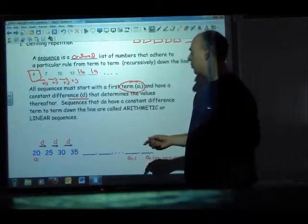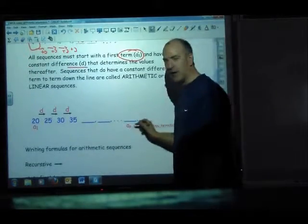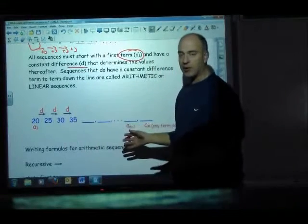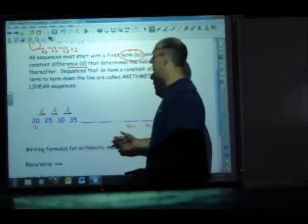But usually, you guys, what we're trying to find is some value down the line. Can we allow these beginning terms to get us somewhere down the line and also to make a formula for how we get down the line?